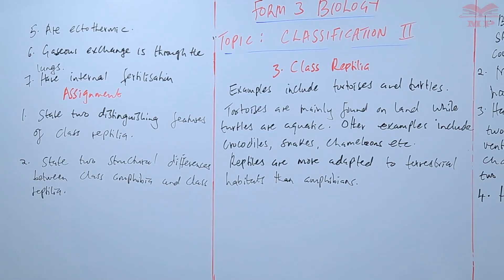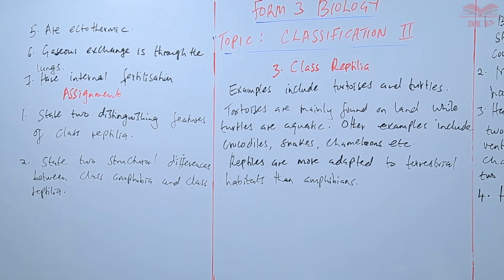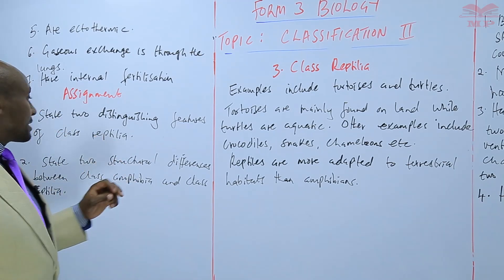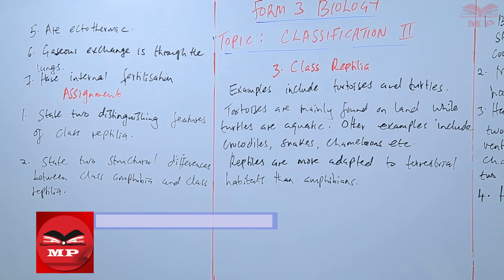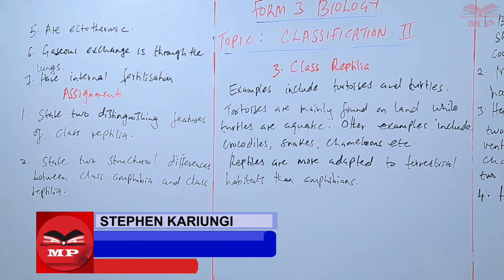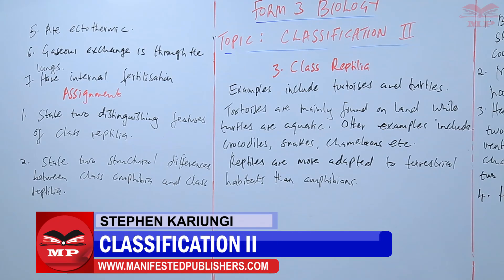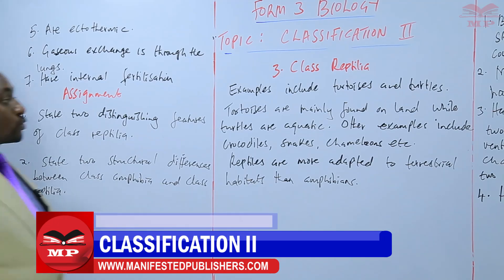For the assignment: the first question — state two distinguishing features of class Reptilia, meaning features that are not found in any other class. Number two — state two structural differences between class Amphibia and class Reptilia.